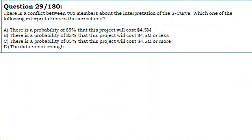Option B: There is a probability of 85% that this project will cost $4.5 million or less.